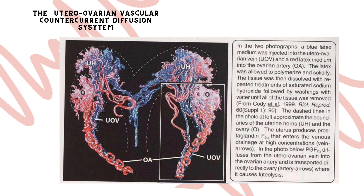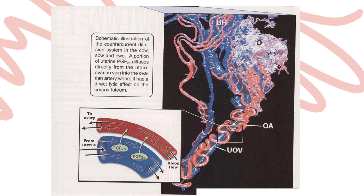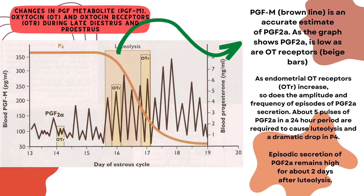The utero-ovarian vascular countercurrent diffusion system is illustrated in two photographs. A blue latex medium was injected into the utero-ovarian vein (UOV) and a red latex medium into the ovarian artery (OA). A portion of uterine PGF2α diffuses directly from the utero-ovarian vein into the ovarian artery, where it has a direct lytic effect on the corpus luteum. The graph shows PGF2α levels are low, as are oxytocin receptors at baseline.